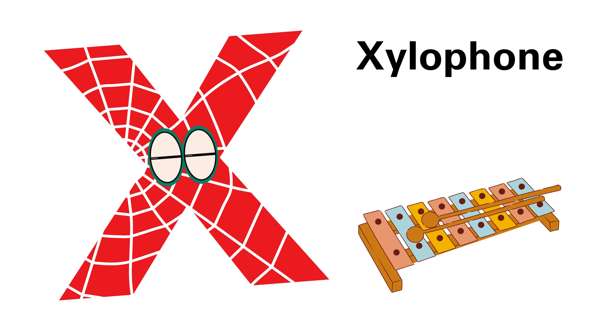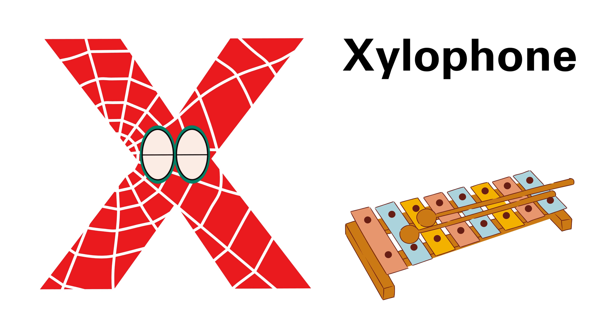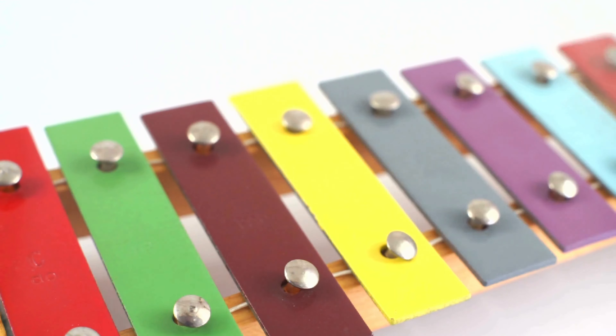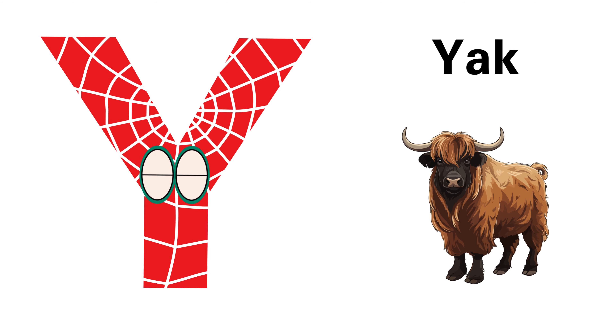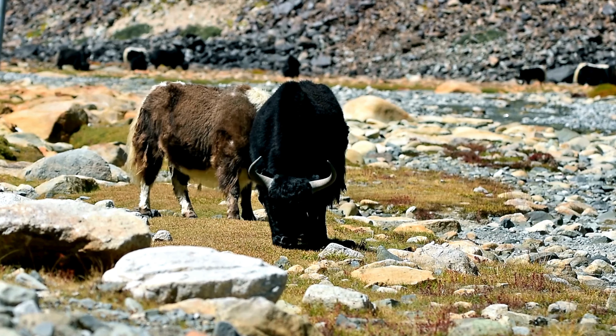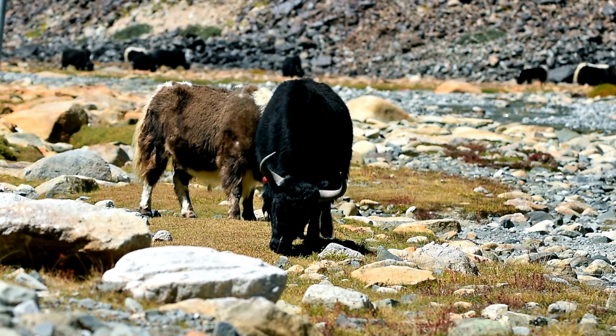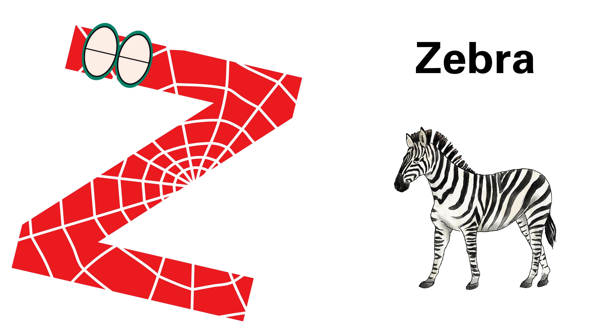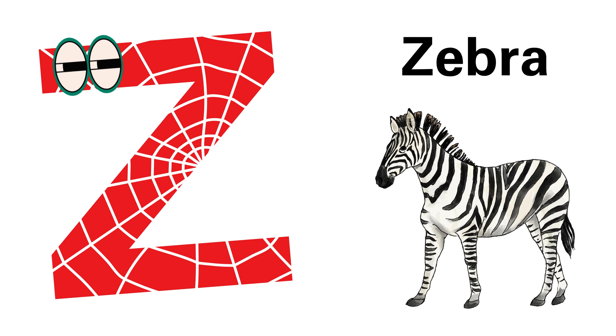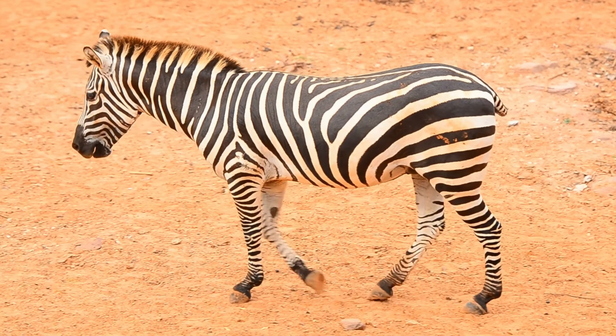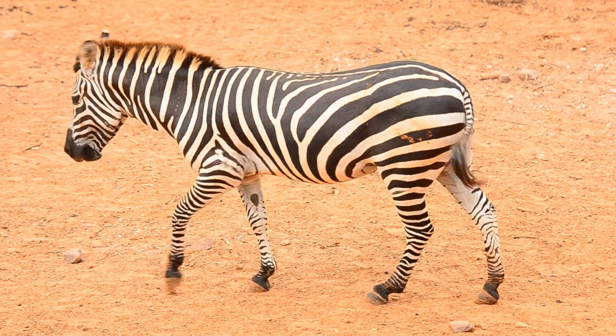Q is for Queen, Q-Queen, Q-Queen, Q-Queen. R is for Rabbit, R-Rabbit, R-Rabbit, R-Rabbit. S is for Spider, S-Spider, S-Spider, S-Spider.